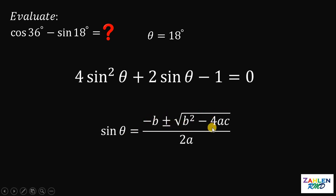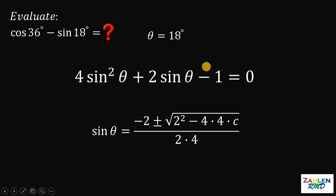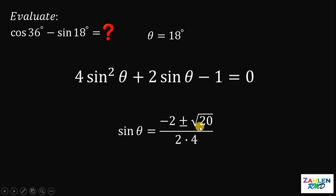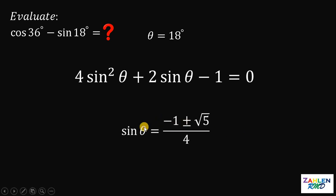Using the quadratic formula: negative B plus or minus square root of B squared minus 4AC, all over 2A. In this equation, B equals 2, A equals 4, and C equals negative 1. Inside the radical: 2 squared is 4, and negative 4 times 4 times negative 1 gives 16, so 4 plus 16 equals 20. Square root of 20 equals 2 times square root of 5. A factor of 2 cancels, giving sine theta equals negative 1 plus or minus square root of 5, over 4.